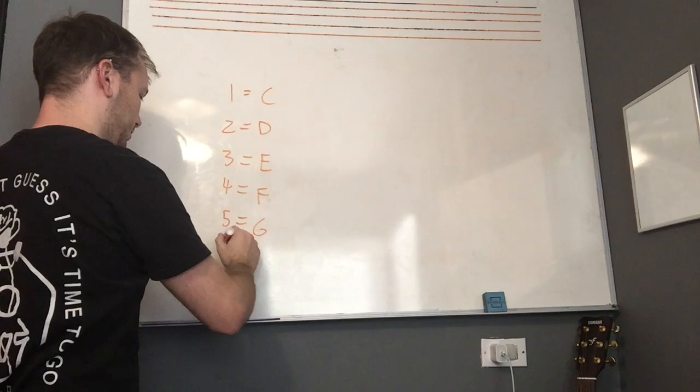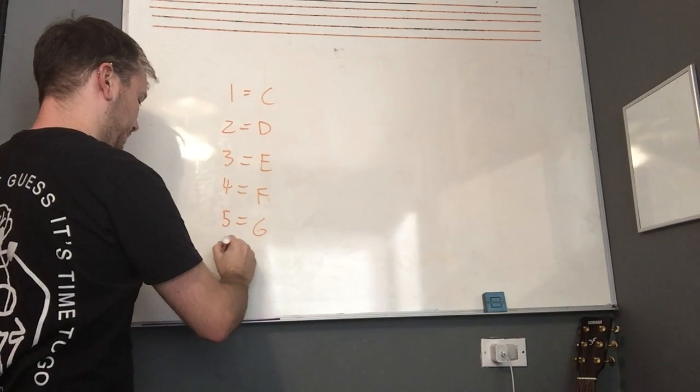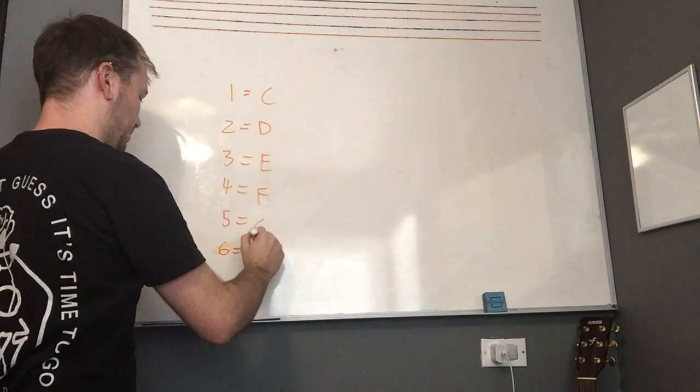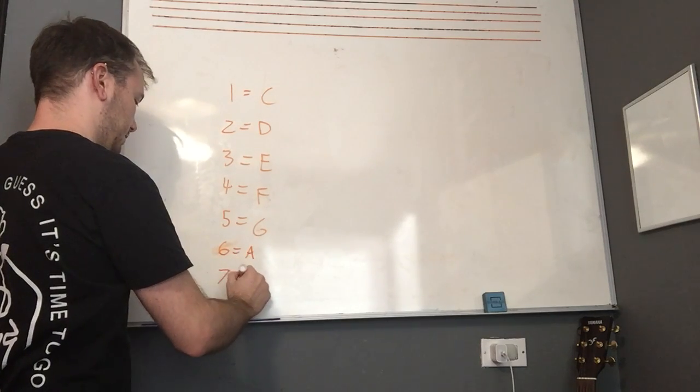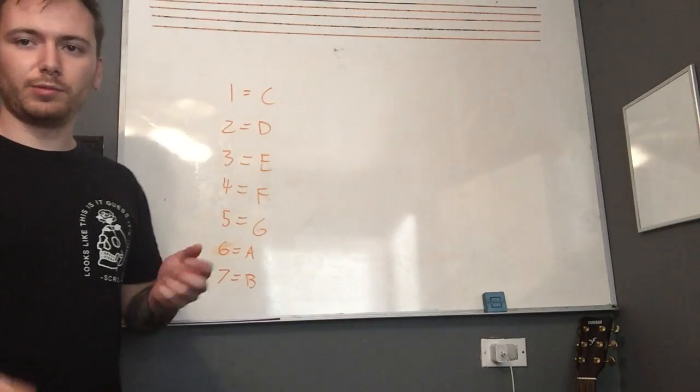That's supposed to be a G, sorry. Six, oh my gosh, screwing everything up. Six is A, seven is B. Okay, so you should kind of know that maybe already.